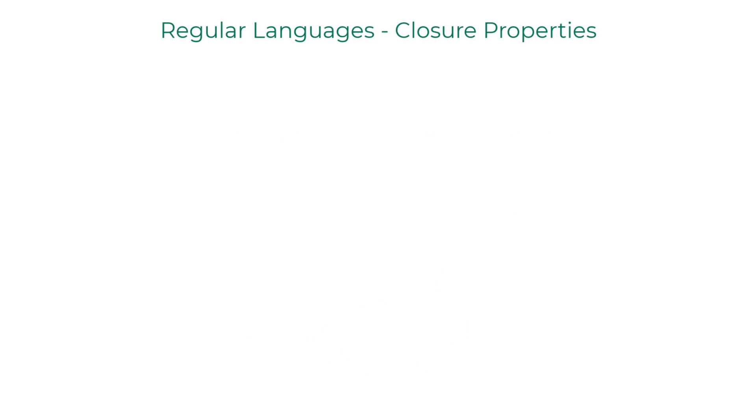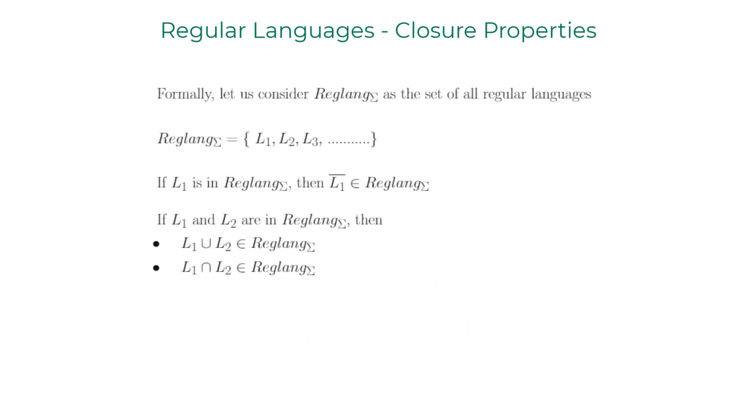Whenever we define a class of languages, we can check if the class is closed under several operators like complement, union, and intersection. If regular languages are closed under complement, it means if L is a regular language, then L complement is also a regular language. Similarly, if L1 and L2 are regular languages, then L1 union L2 and L1 intersection L2 are also regular languages.